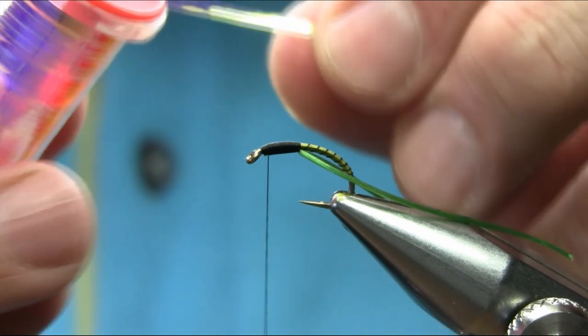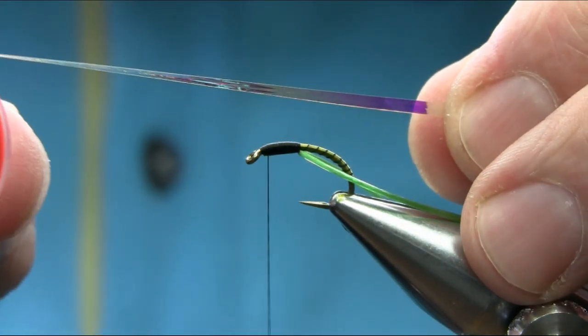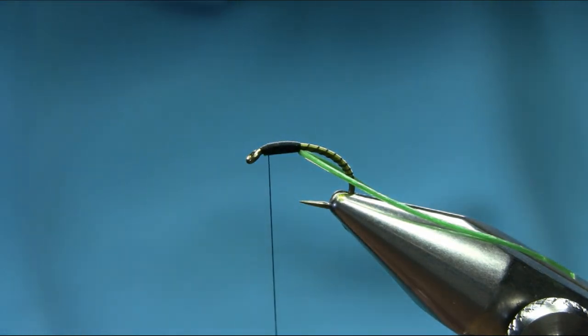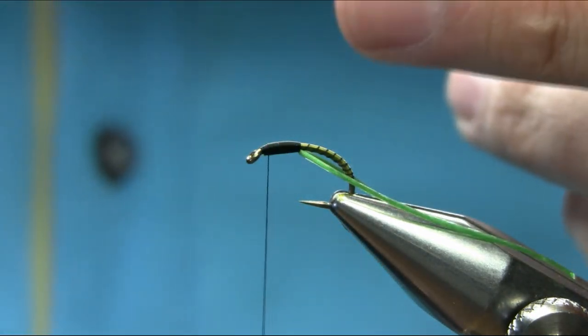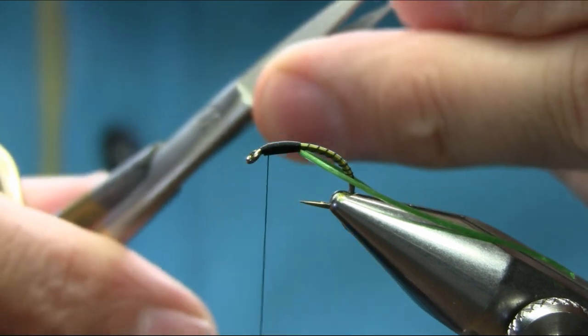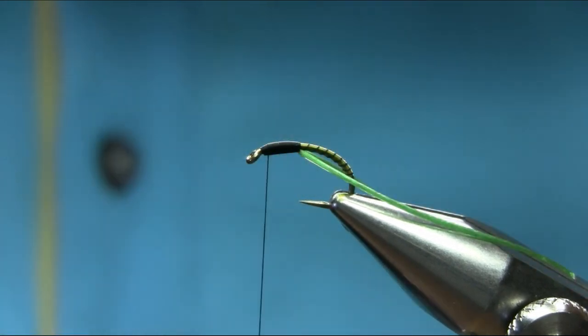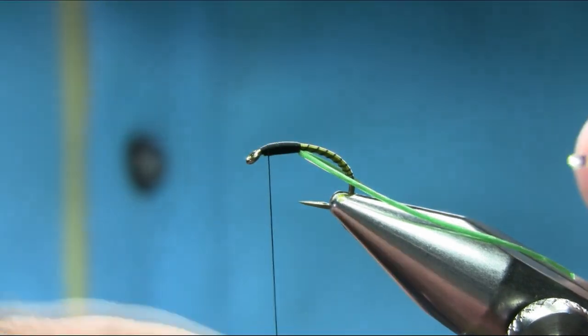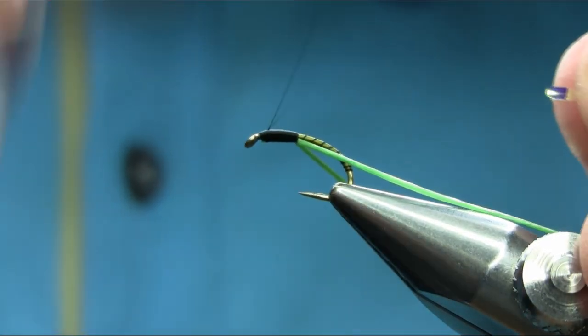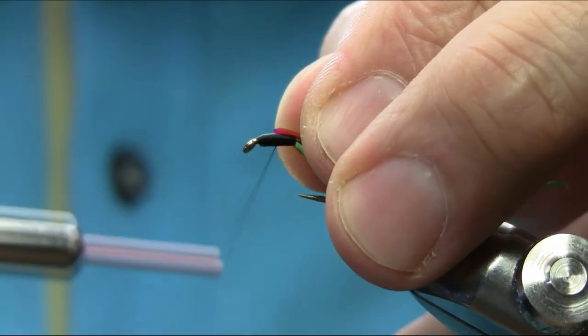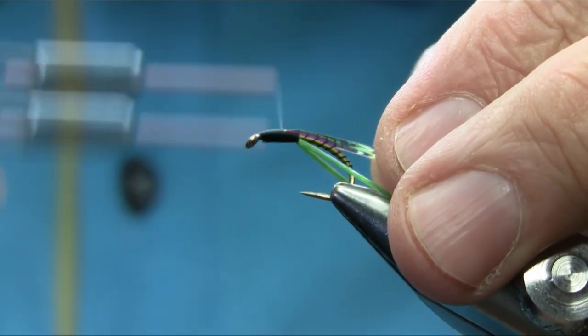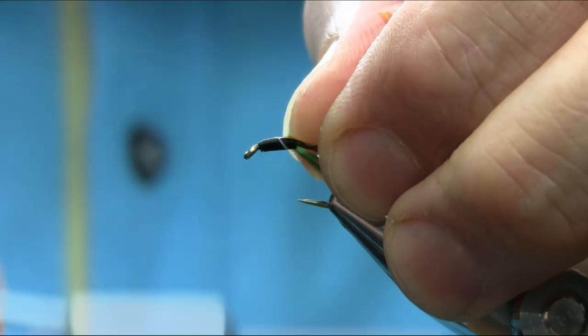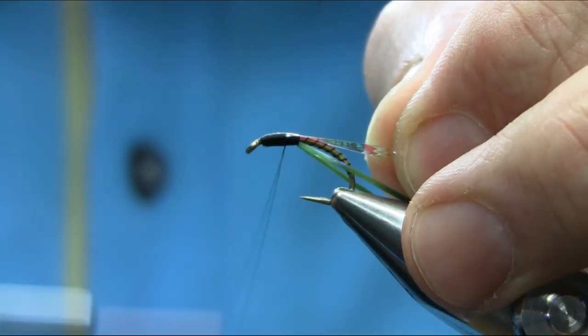I'm going to put some flashback. This is Mylar Mirage Tinsel, large size. Cut this piece. I'm just going to cut this point so it sits okay. Come back in the middle and catch this Mirage on top of the hook. Make sure it's sitting okay.